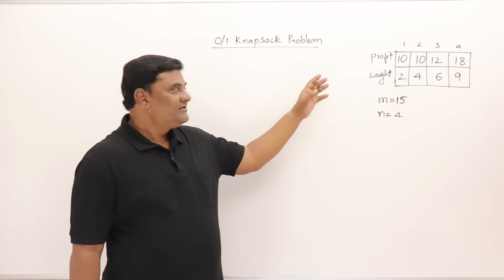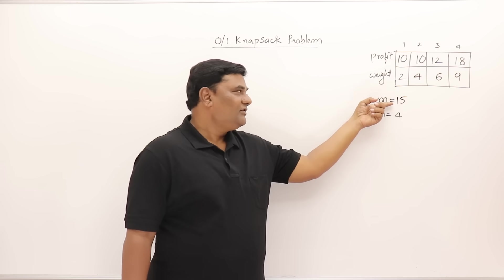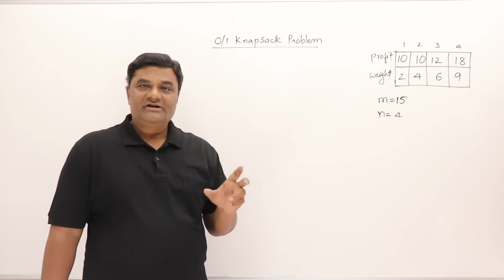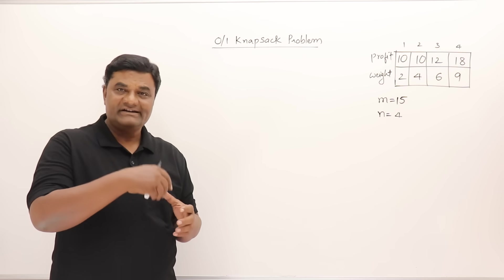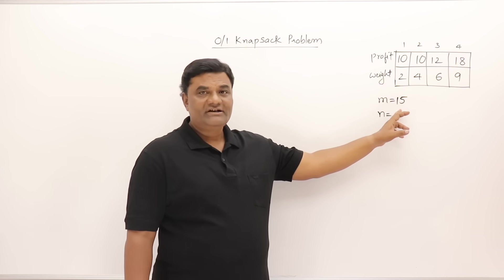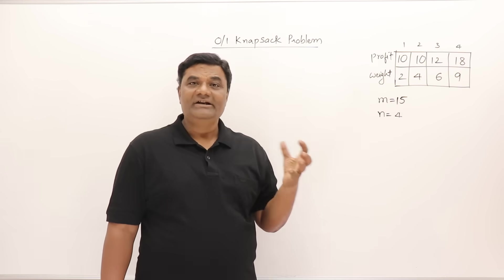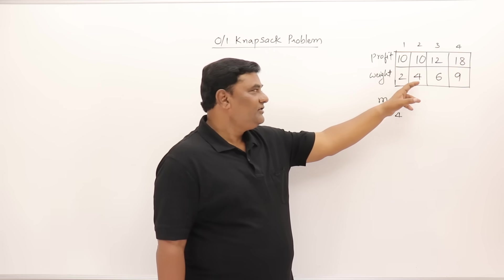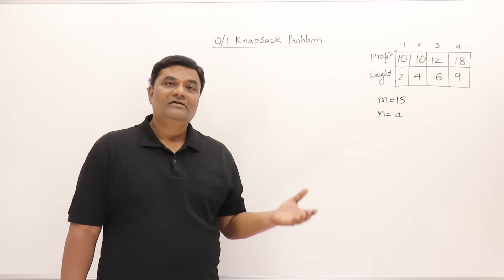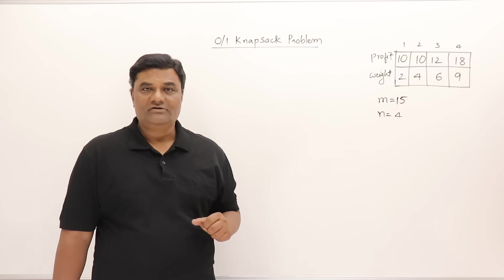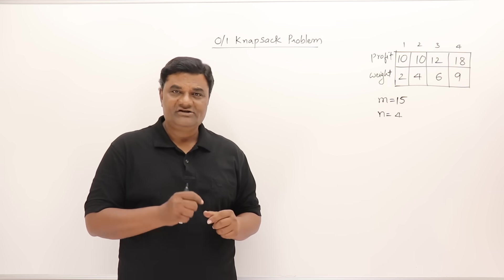This is the 0/1 knapsack problem. Some objects are given; for each object there is some profit and some weight. There is a bag of capacity 15, and the objective is to fill the bag with those objects such that the total weight is less than or equal to 15. If you are taking any object, you must take the complete object or don't take it at all. The total profit gained should be maximized, so it's a maximization problem.